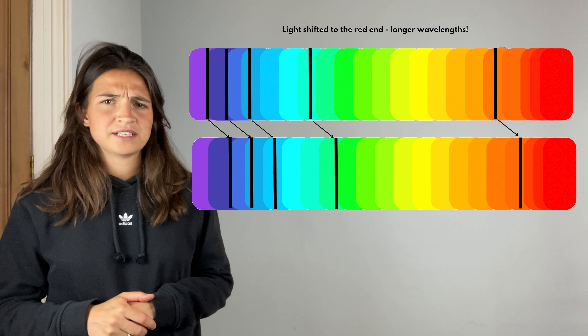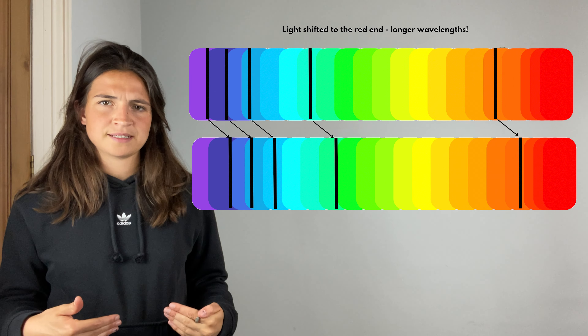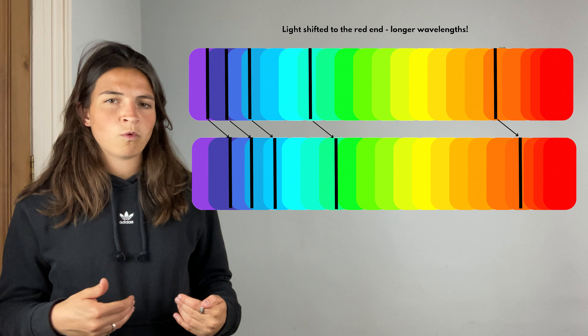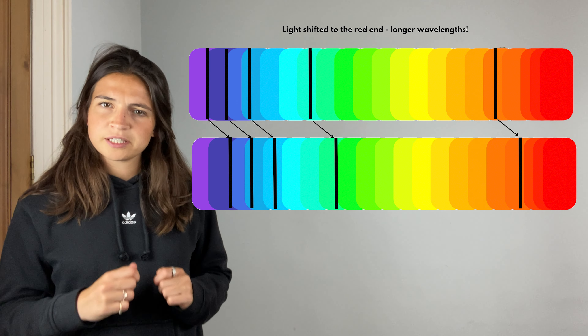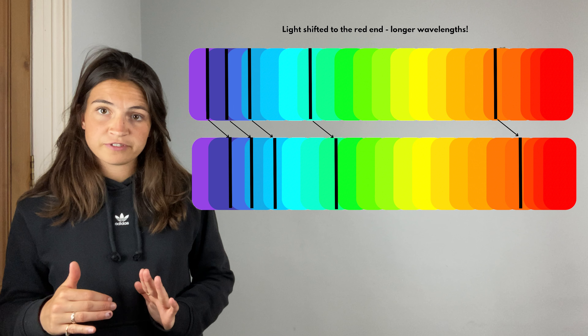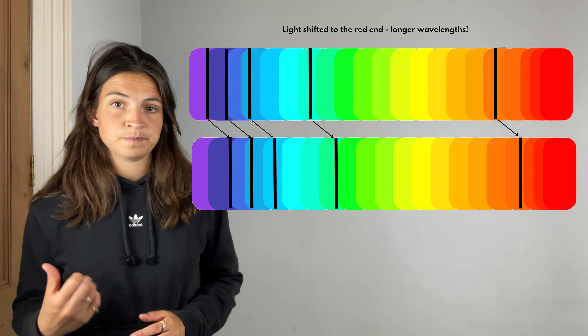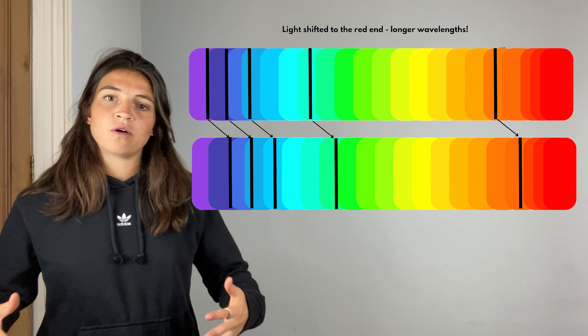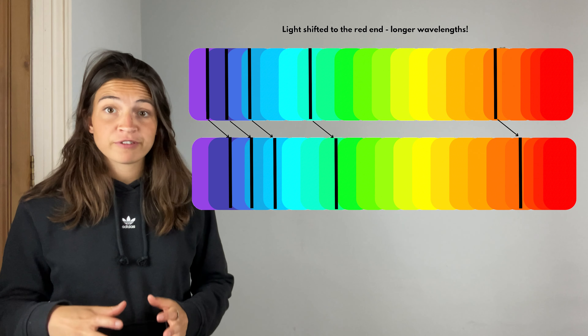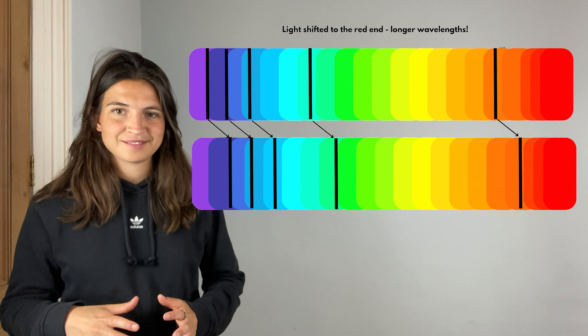When I receive light from a distant galaxy, my pattern changes to look like this. As you can see, it's exactly the same pattern, but the wavelengths of the absorbed light have been shifted towards the red end of my visible spectrum. The red end corresponds to longer wavelengths and smaller frequencies of light.